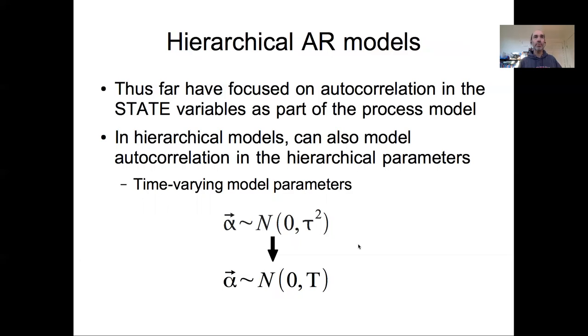The other really important and powerful generalization of autoregressive models that is really kind of cool, honestly is sort of the thing that I think is underexploited, is a really powerful framework, is to combine autoregressive models with random effect models with the autoregressive component in the hierarchy, not in the lower level. So thus far, we focused on autocorrelation of state variables as part of the process model. In hierarchical models, we can also think about autocorrelation in the parameters.